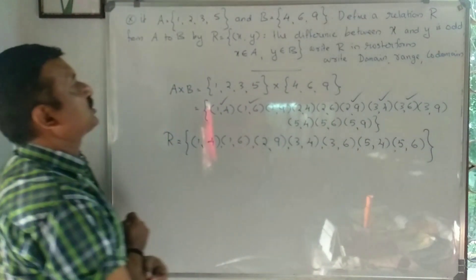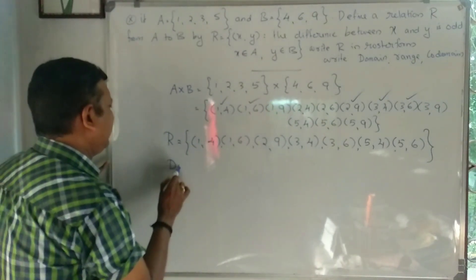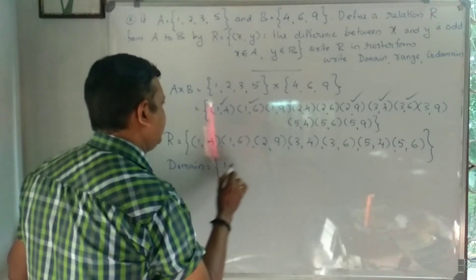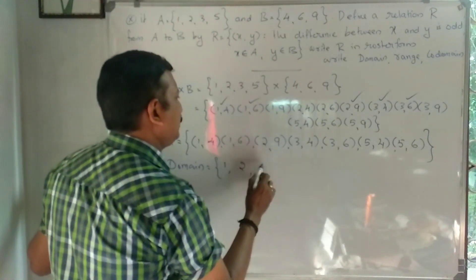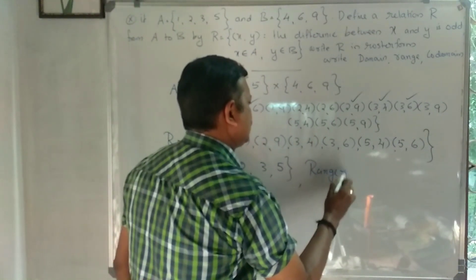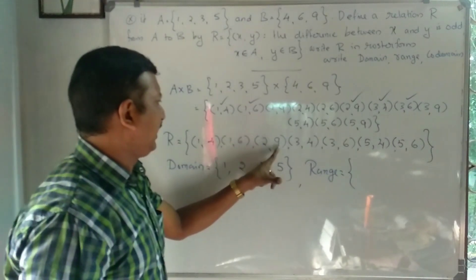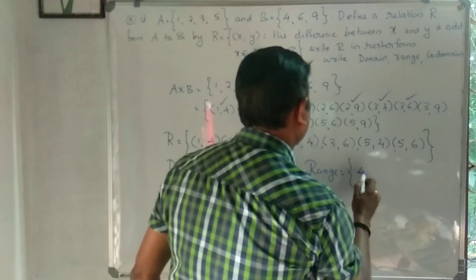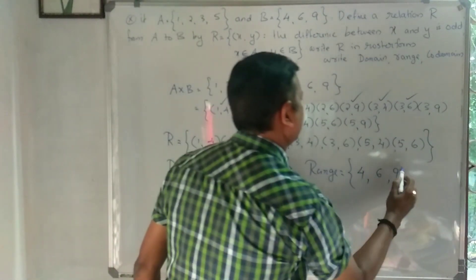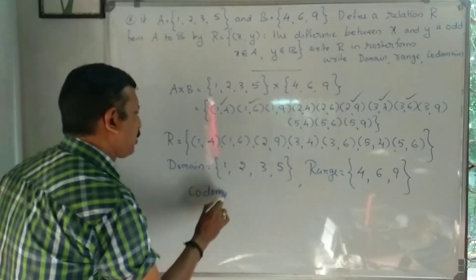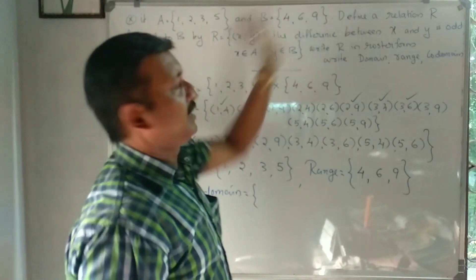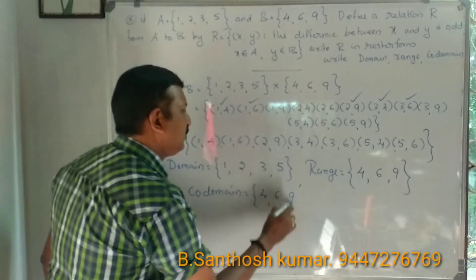So R in roster form includes the pairs where the difference is odd. The domain is the set of x-coordinates used: {1, 2, 3, 5}. The range consists of the y-coordinates that appear: {4, 6}.